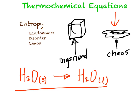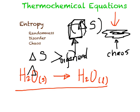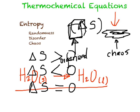Entropy is represented by delta S. What happens if a system has an increase in entropy? That means it's becoming more disorganized. If the system decreases entropy, the change in entropy is going to be less than zero. If the system does not experience any change in entropy, delta S equals zero. In this case, with more chaos, you have a positive number for delta S.